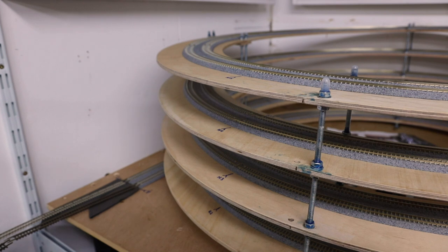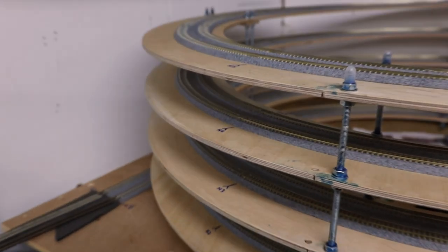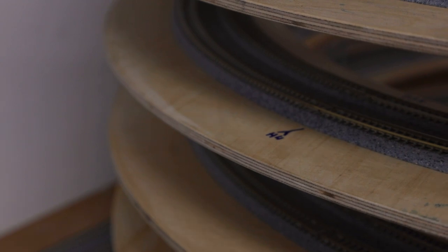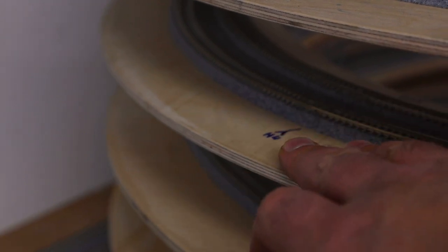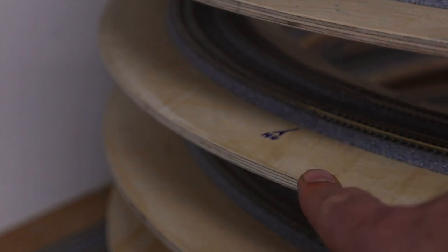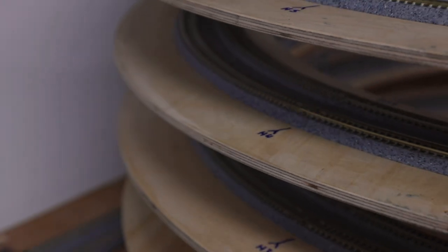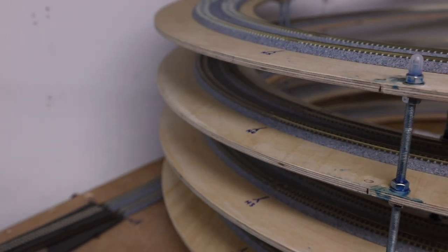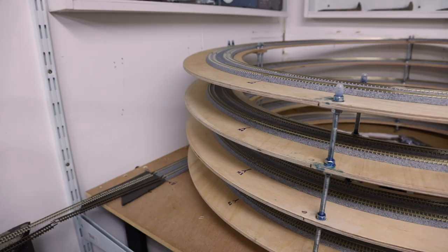Just to show you where the blocks are, I'll zoom in here. You can see there is a block marking and they're all in the same place all the way down just to make it easier for me. So that's where the insulating joiners will be. After I've done that, I will then start adding the feeders. Let's get started on adding the blocks.